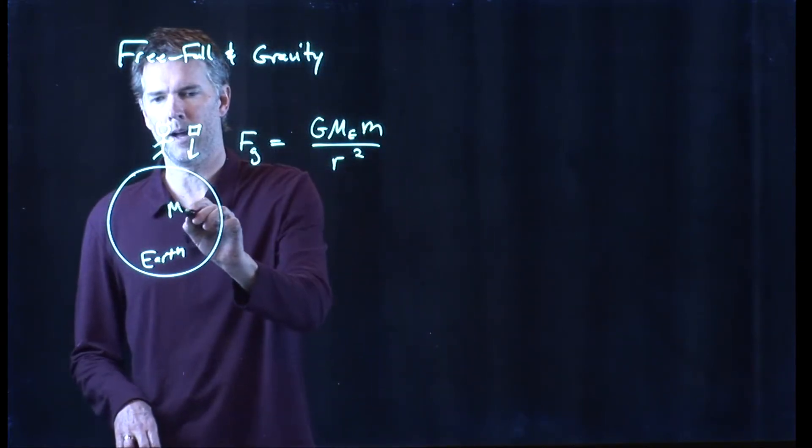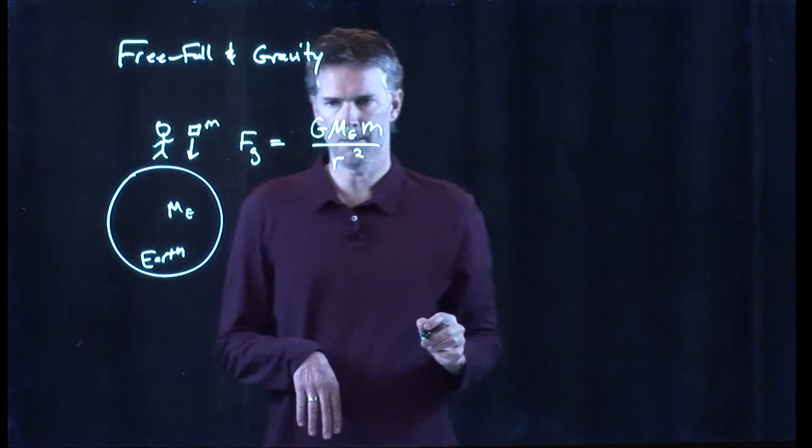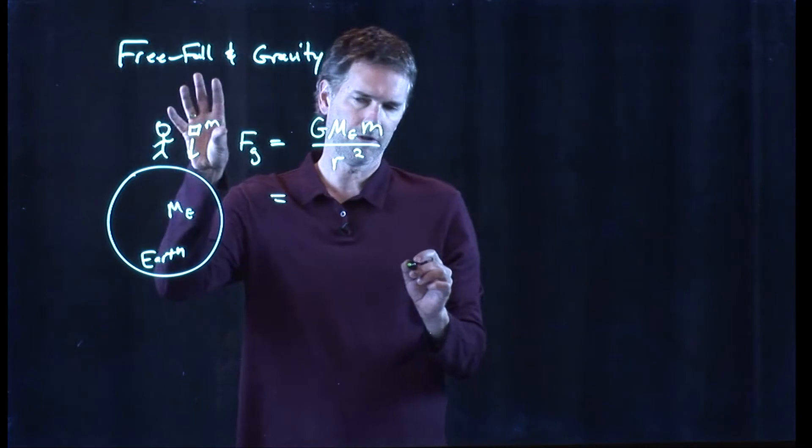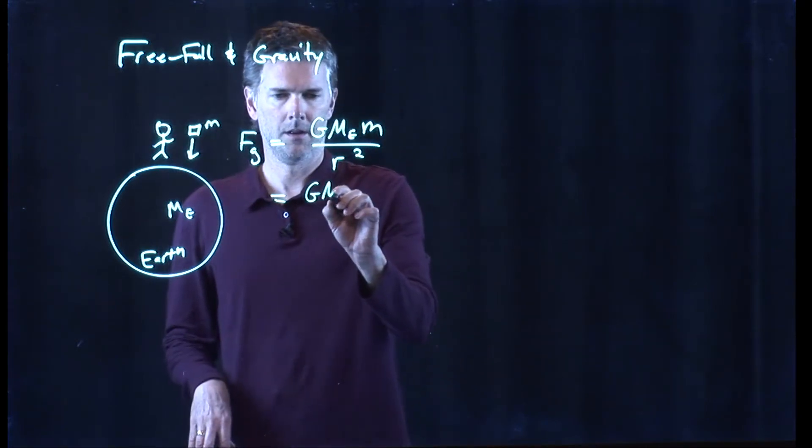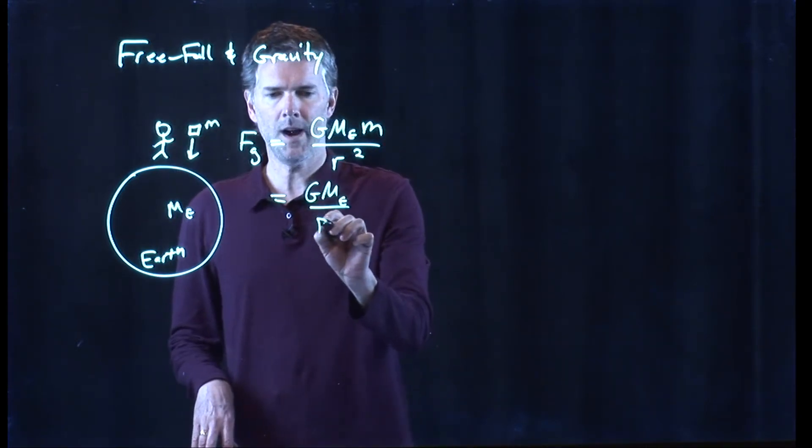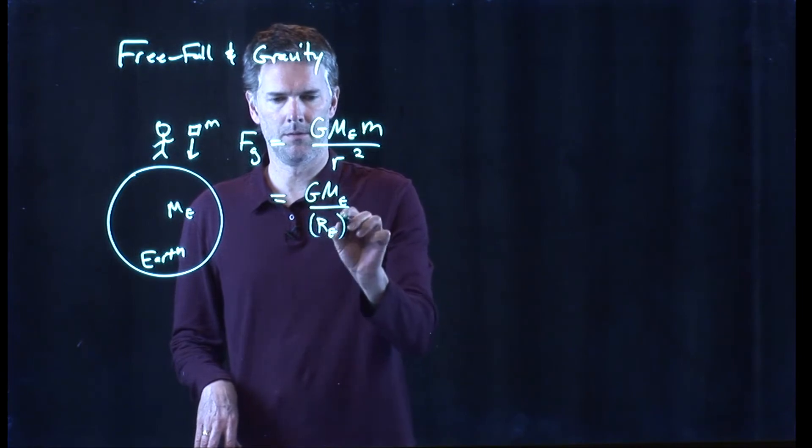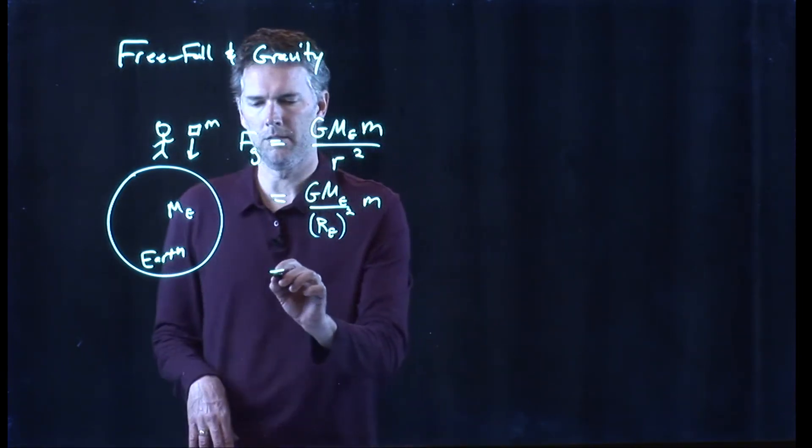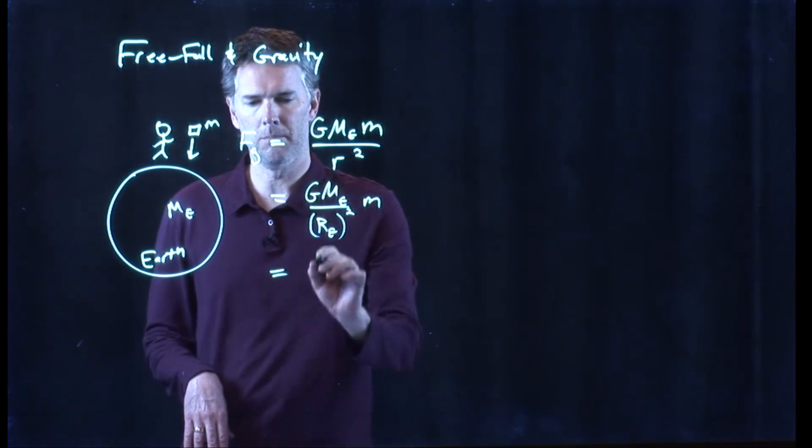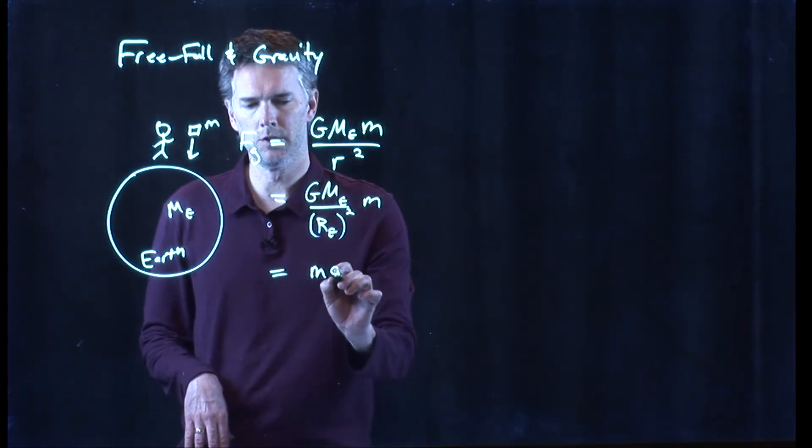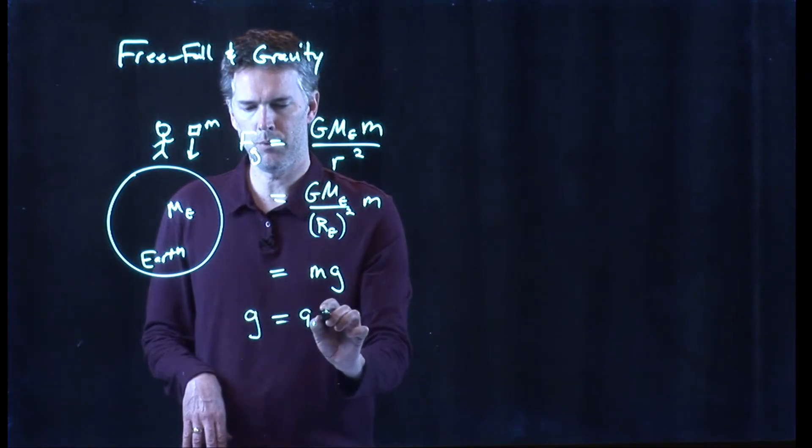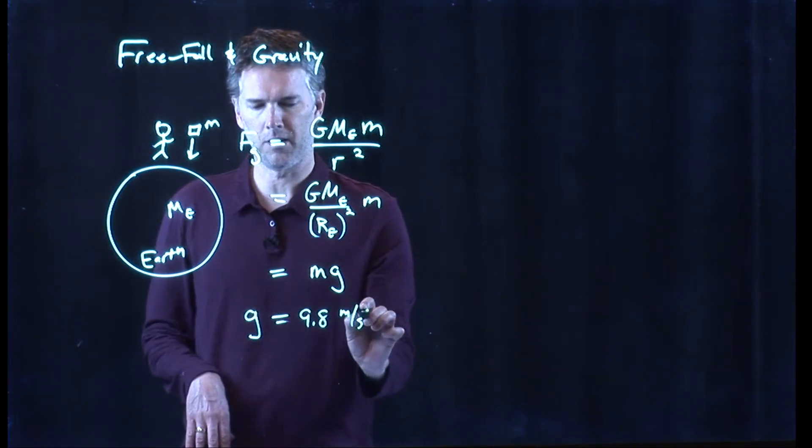This is the mass of the earth. This is m, the mass of the object, and we know what r is. If we're on the surface of the earth then r is just the radius of the earth, and we know exactly what that is.